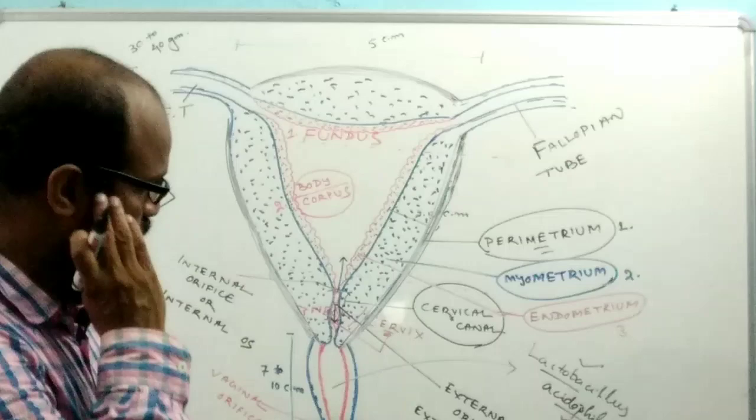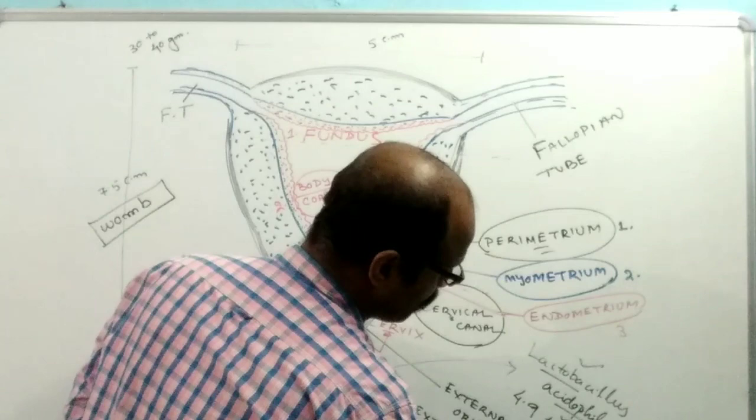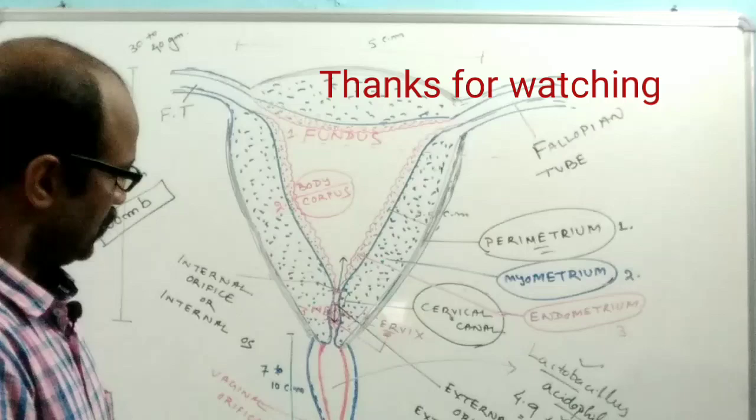This keeps the pH of the vagina between 3.5 and 4.9. The presence of lactic acid prevents infection and protects the vagina from infection.